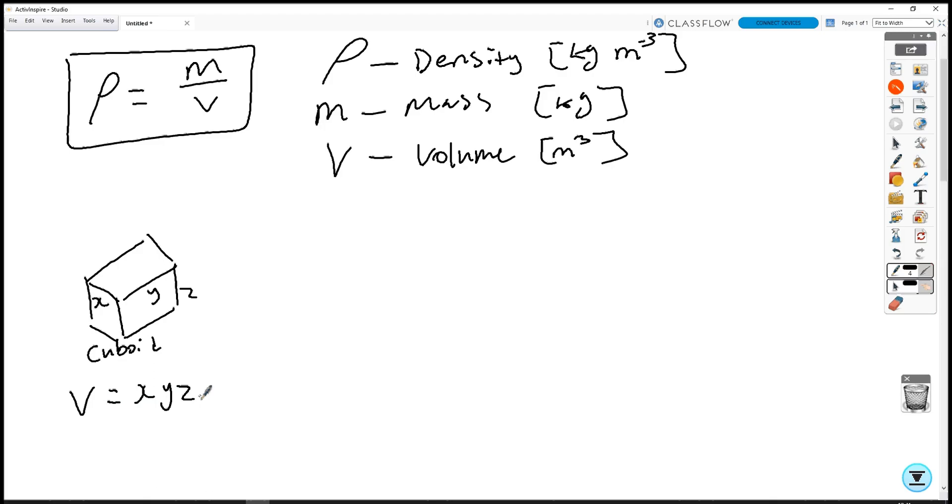If we have a cylinder with radius r and height h, then the volume of a cylinder is just given by its cross-sectional area multiplied by its height. The cross-sectional area is circular, so it's going to be pi r squared times by h.